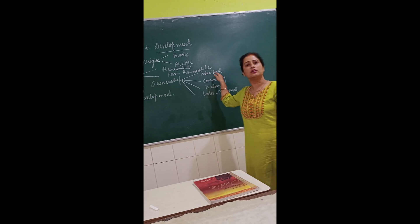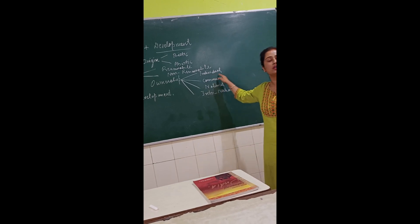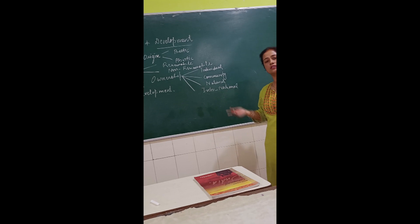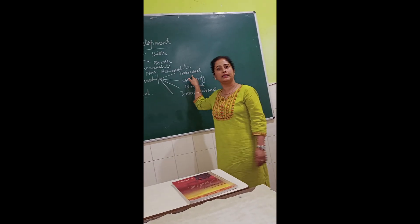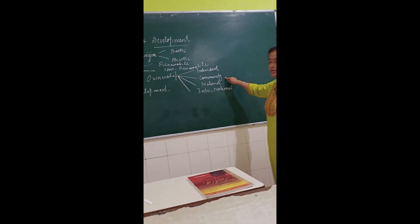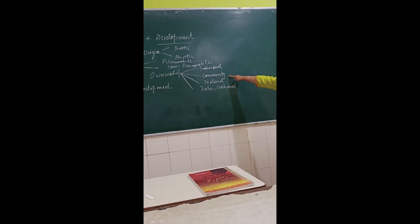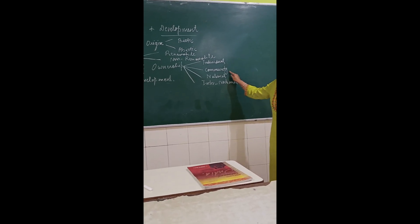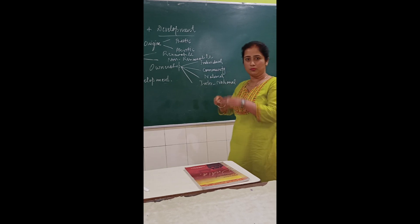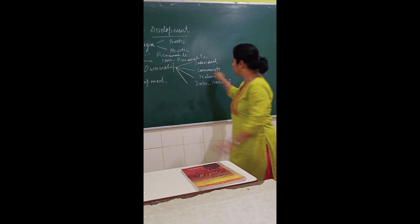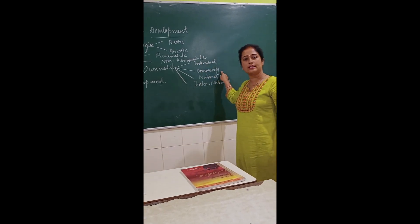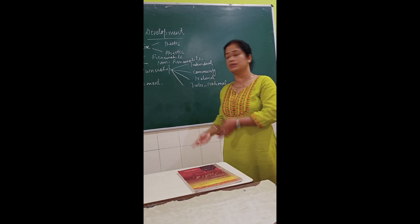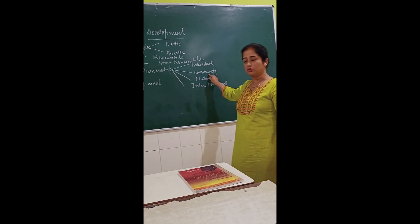Second is community resources. These are the resources which are accessible to all the members of the community. That is known as community resources, like grazing grounds, playgrounds, and picnic spots.